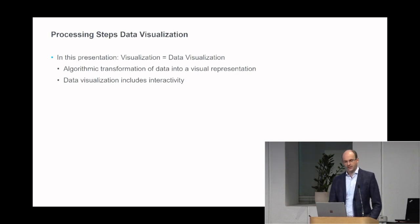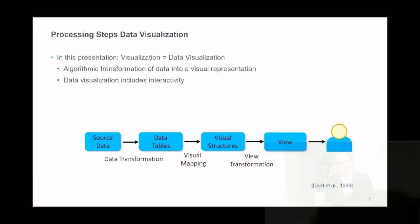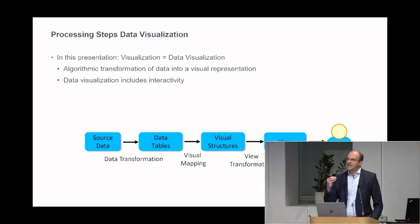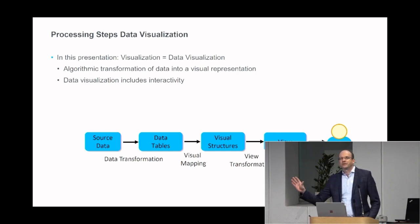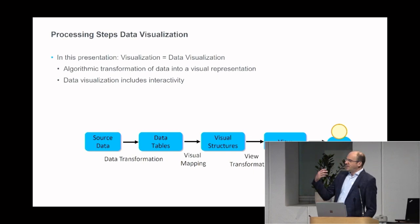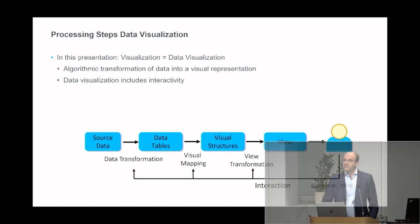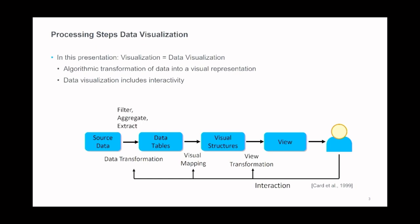Data visualization, as I see it, always includes interactivity, and typically we have these processes as nicely outlined in the information visualization reference model as CART and others proposed it. You have some form of source data, transformed into structured data in the form of tables. Then you add visual and geometric information attached to this data — for example, numbers mapped to certain colors or positions. Finally, you have view transformations if you want to zoom in or change the perspective. This is then perceived by a viewer, so if you don't have this person for a project, the whole pipeline does not make sense. It's interactive, so somebody watching can interfere with individual stages — filter and aggregate data, change visual mappings, zoom in or pan.